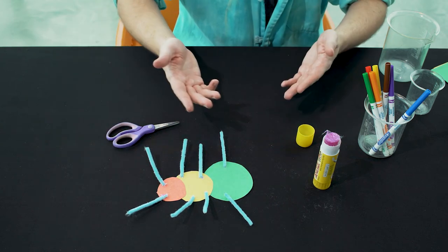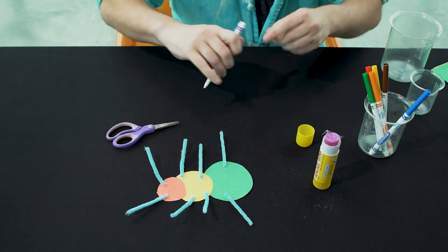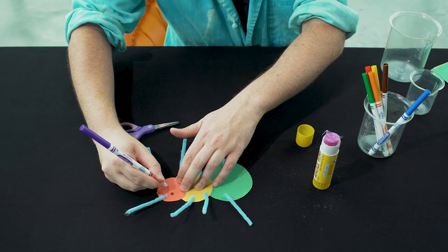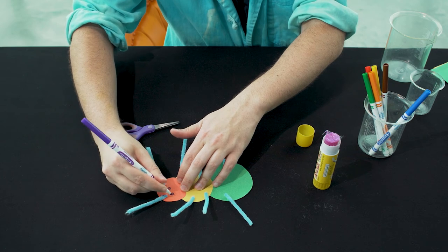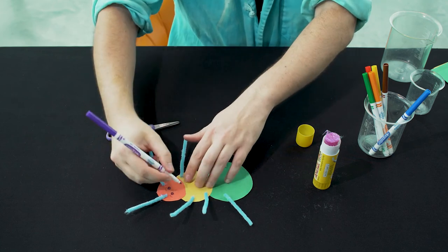Finally, we want our insects to have some eyes and a mouth so it can see. So, we're going to take our markers and draw on some eyes. Mine has eyebrows and a mouth.